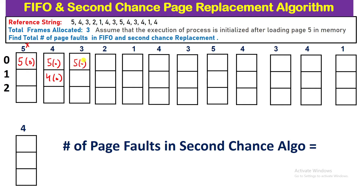Page 3 arrives — not present, page fault, placed in empty frame with reference bit 0. Pointer moves to the next position. Now all three frames hold 5 (bit 0), 4 (bit 0), 3 (bit 0). Page 2 arrives — all frames full. The pointer points to frame with page 5; its reference bit is 0 so page 5 is replaced by page 2 with reference bit 0. Pointer advances. At this point, Second Chance is behaving just like FIFO.